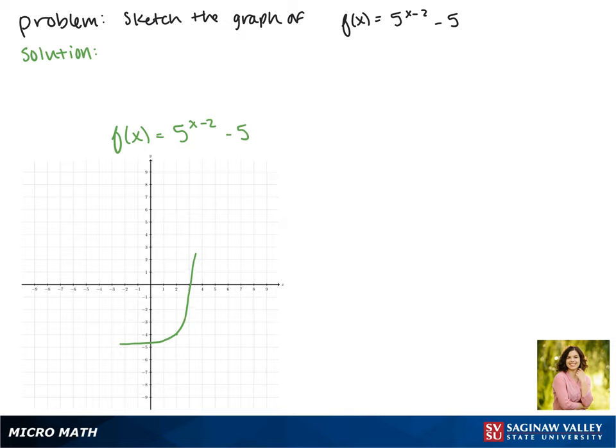Where it used to pass through the point 2, 1, now it passes through the point 2, negative 4.